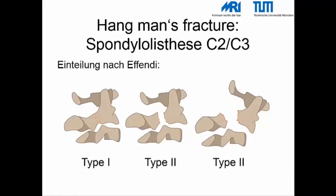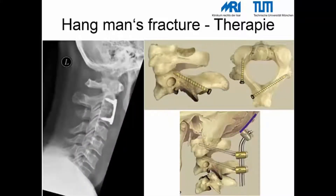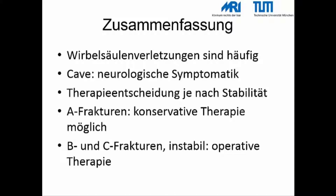Die Hangman's Fracture ist eine Sonderform der C2-C3-Verletzung, eingeteilt nach Effendi nach dem Grad der Dislokation: Typ 1 traumatische Spondylolisthese ohne Dislokation, Typ 2 Dislokation ohne deutliche Abscherung des hinteren Fragments, Typ 3 deutliche Dislokation mit Abscherung. Zusammenfassend lässt sich festhalten: Wirbelsäulenverletzungen sind häufig. Wichtig ist der Ausschluss neurologischer Ausfallerscheinungen. Die optimale Therapie ergibt sich aus der Stabilitätsbestimmung: stabile A-Verletzungen können konservativ, instabile B- und C-Verletzungen operativ versorgt werden. Vielen Dank für Ihre Aufmerksamkeit.